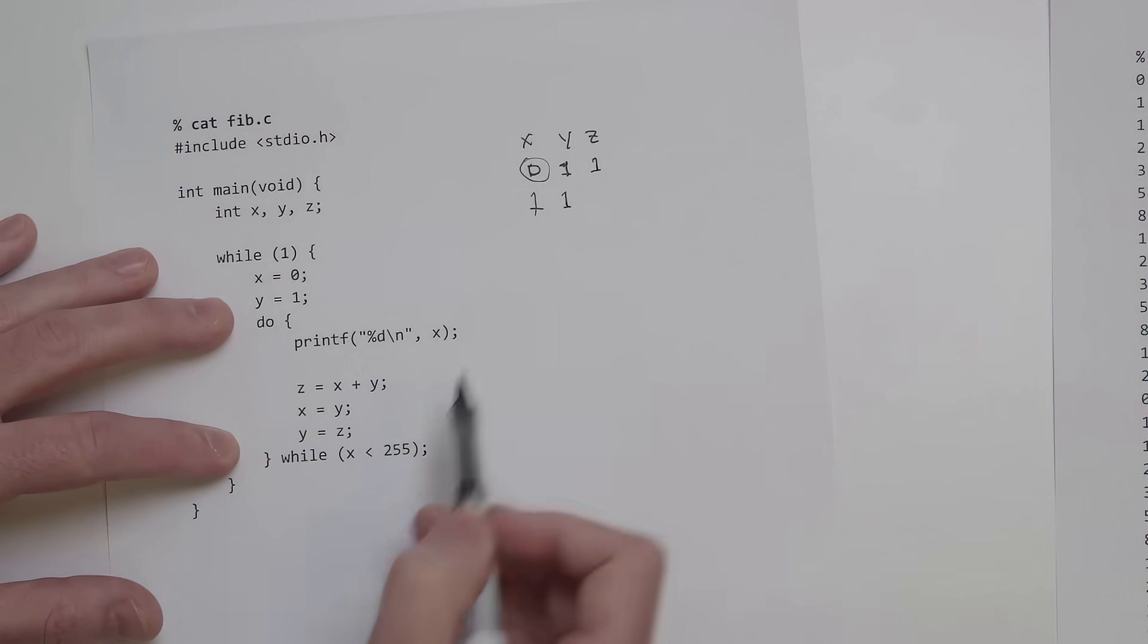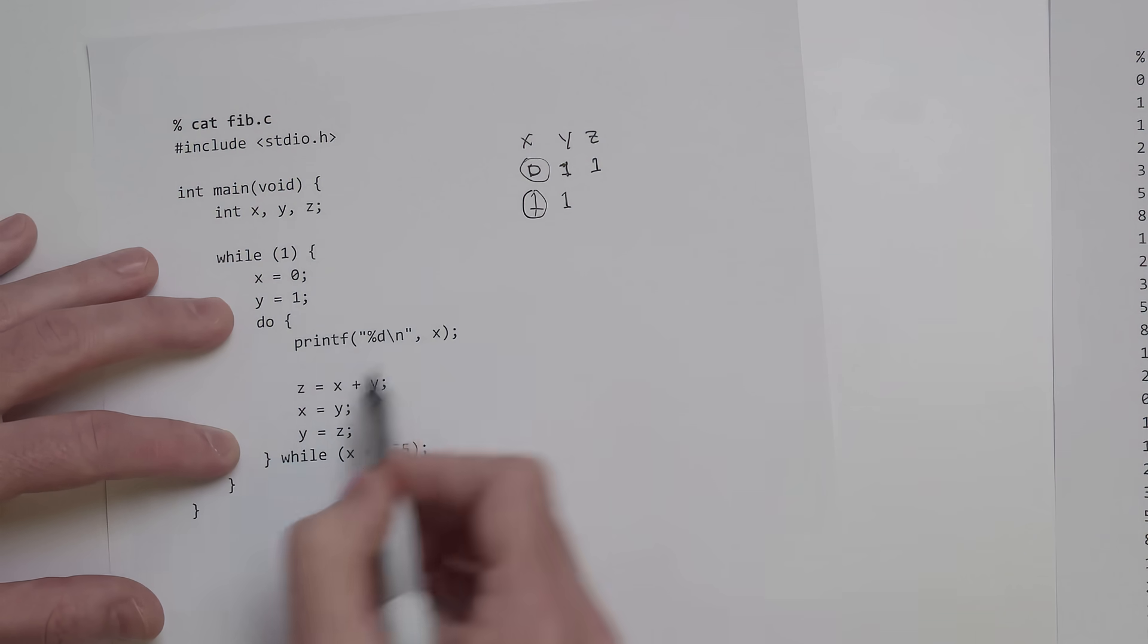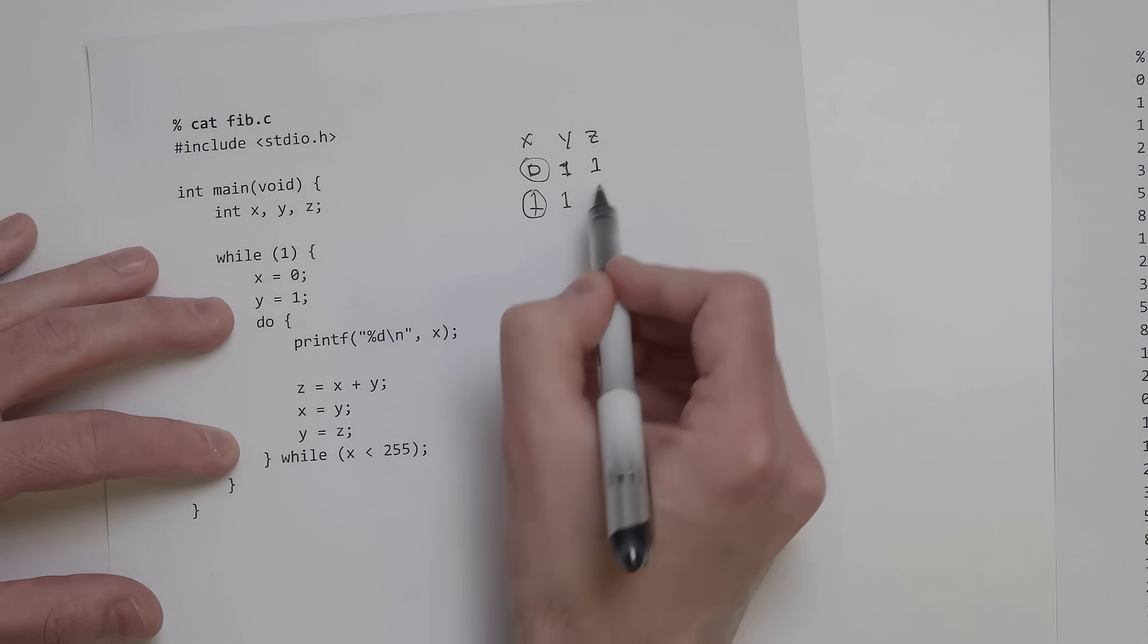Since x is less than 255, we loop through again. We print out x, so x is 1, and then we compute z again, which is x plus y, so 1 plus 1 is 2.